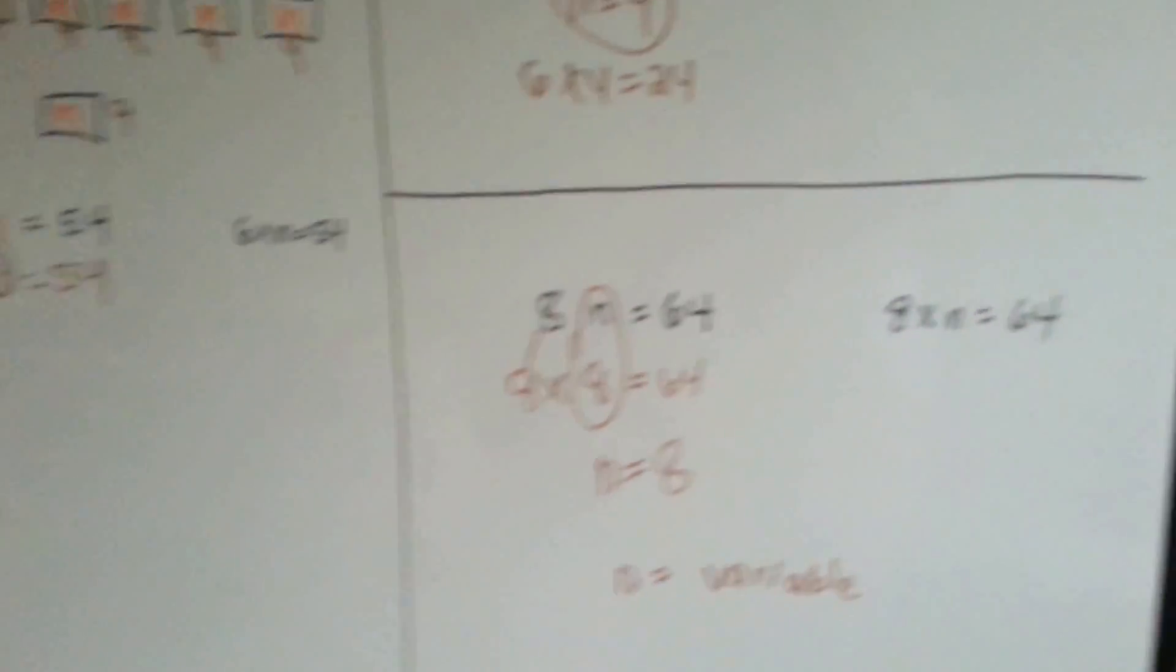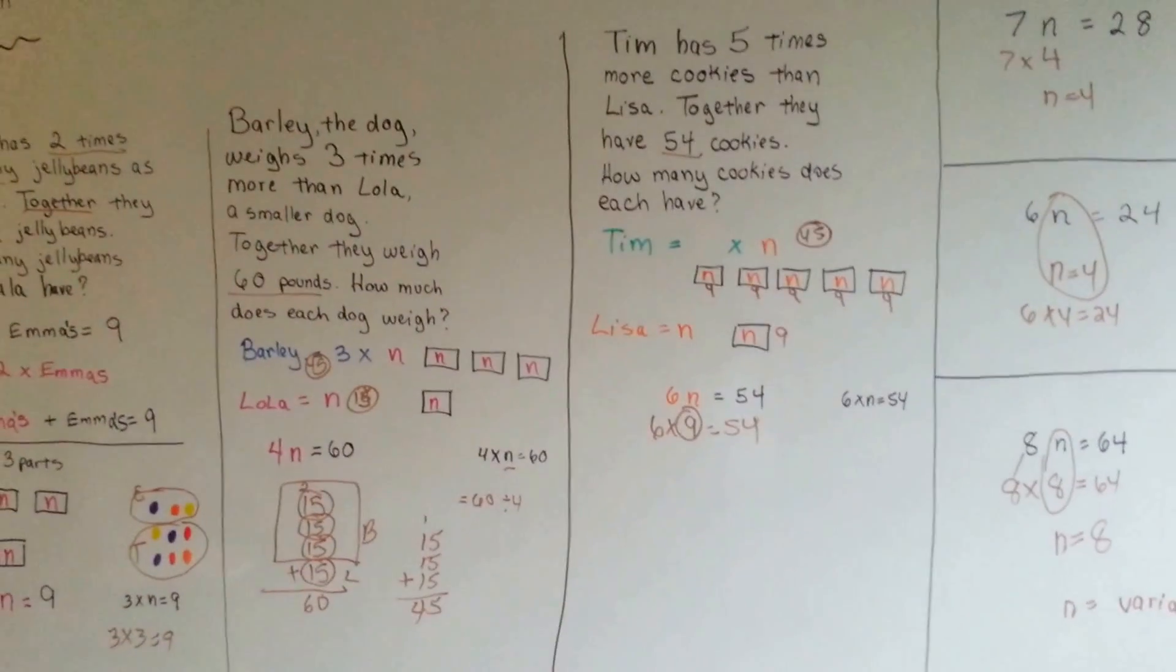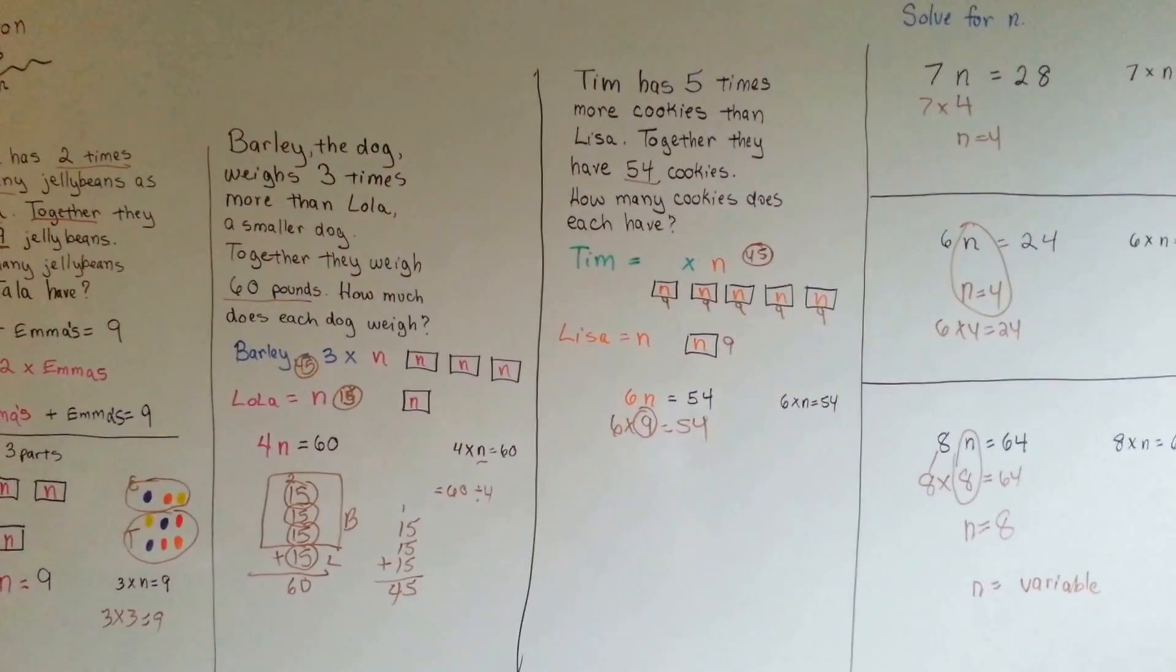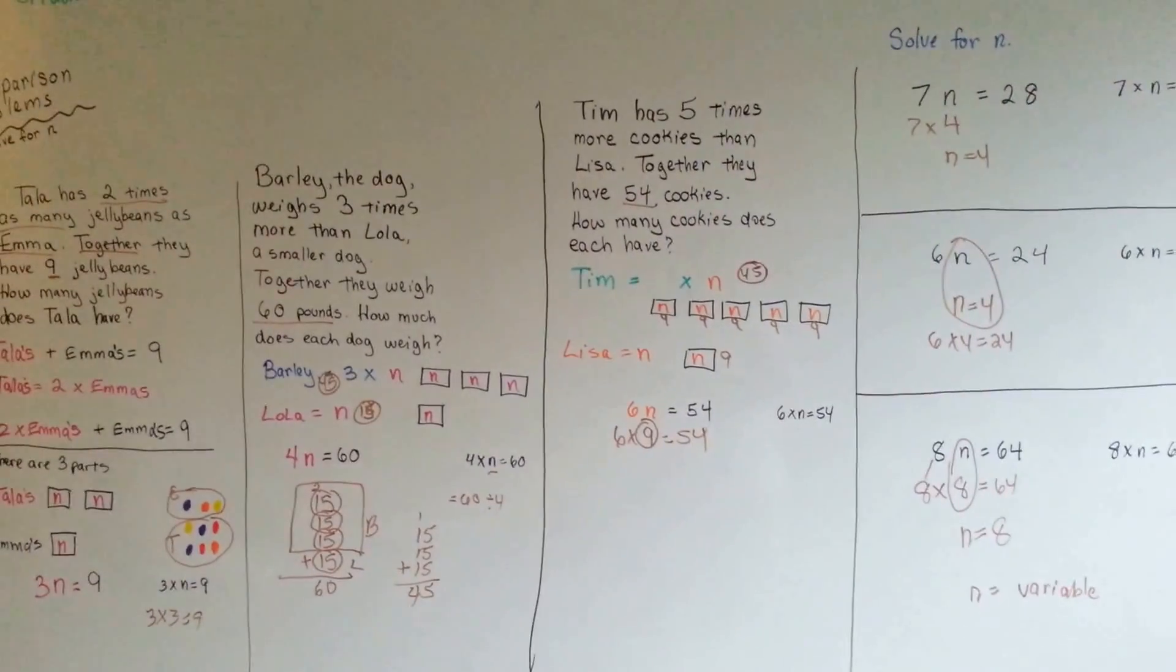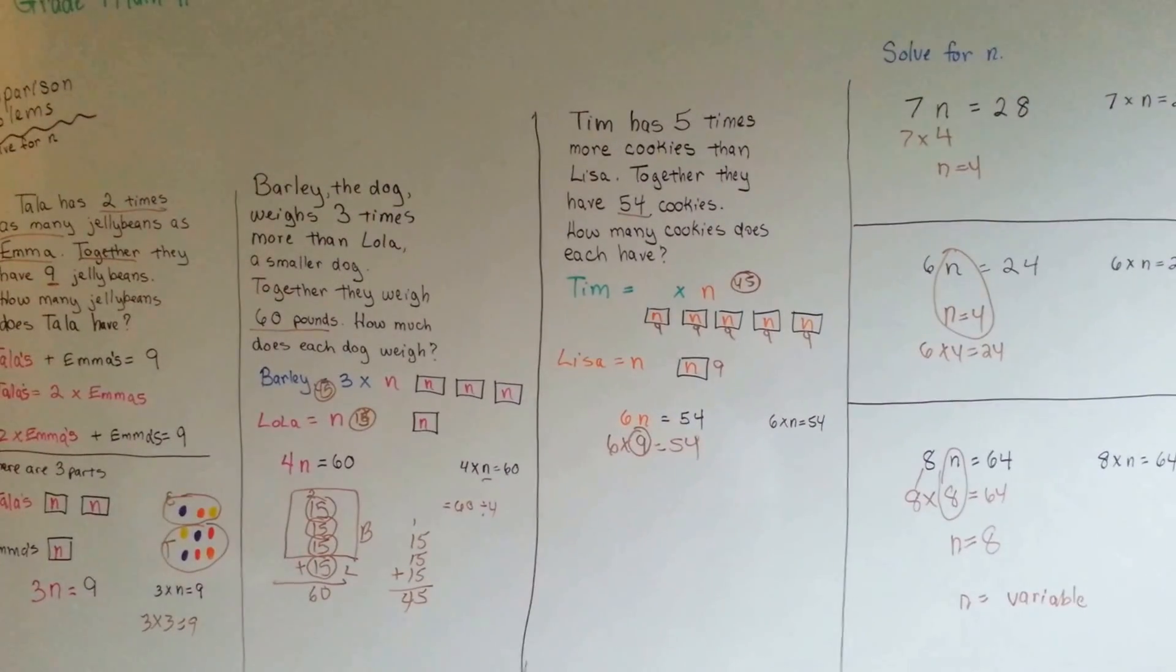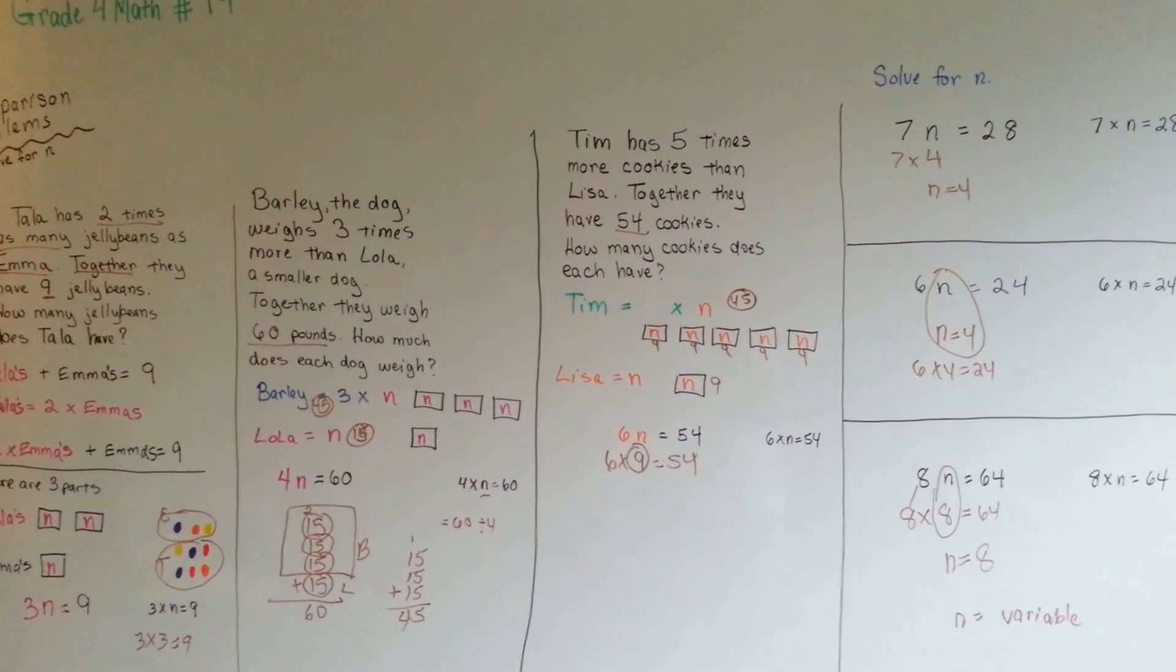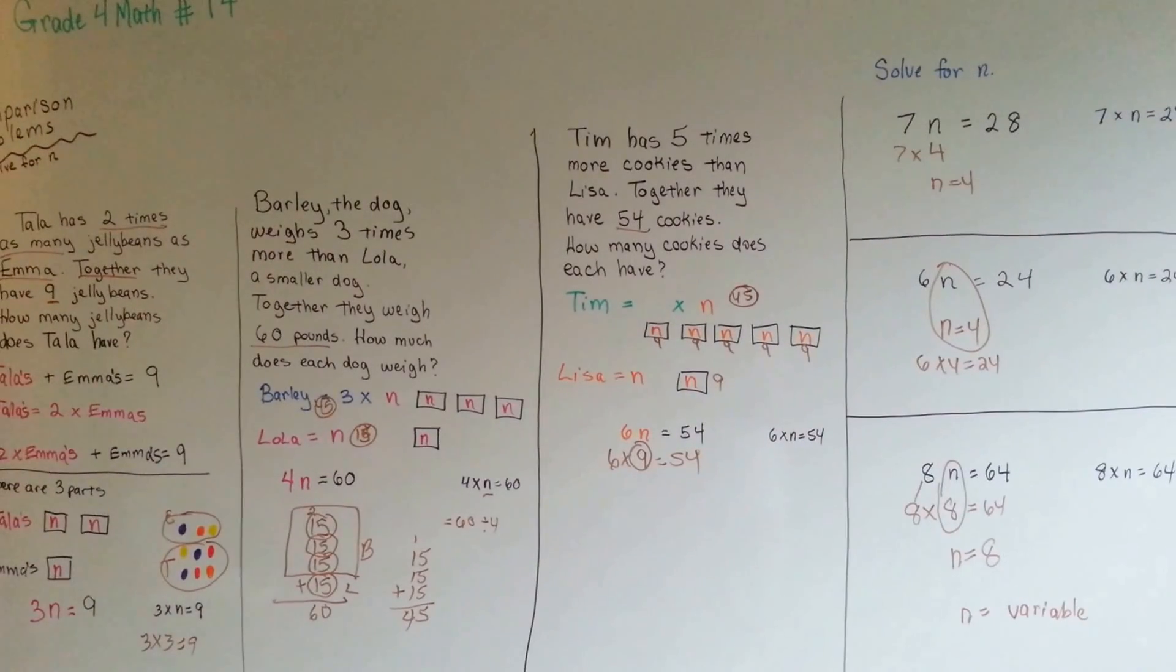That is how we do comparison problems with multiplication, and that is how we use algebra and variables to help us solve the problem. Can you try doing it on your own? Can you think of some problems like these with your family members? Maybe somebody has three times more marbles, or somebody has five times more bananas, or something like that. Maybe you can come up with your own. See you next video. Keep up the good work. Thank you.